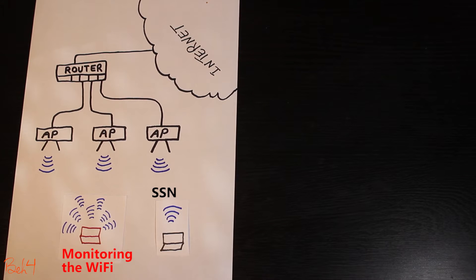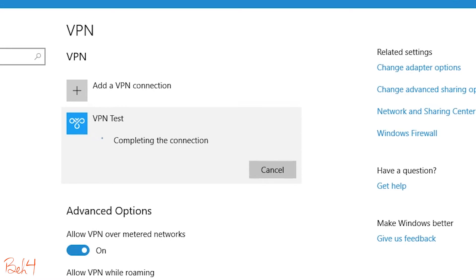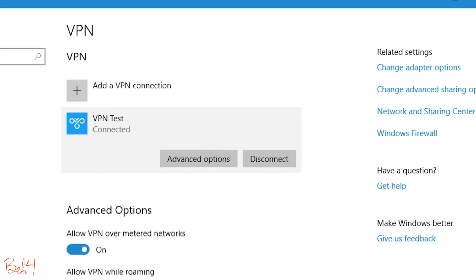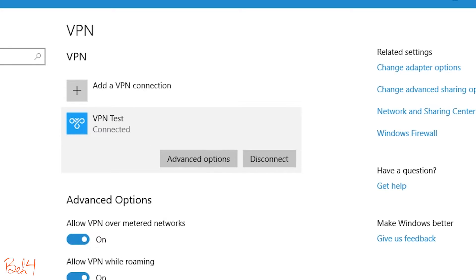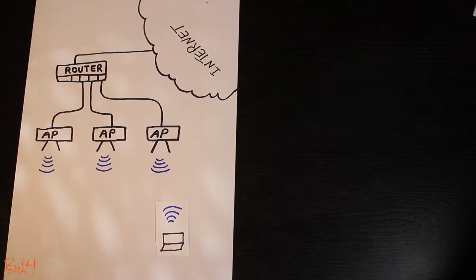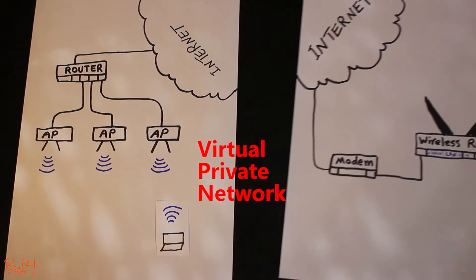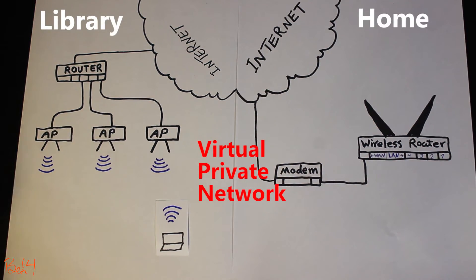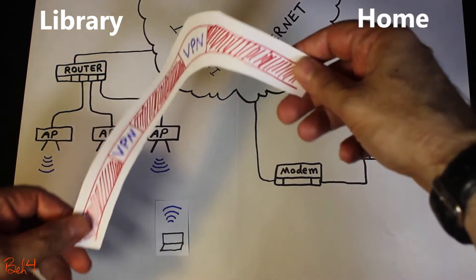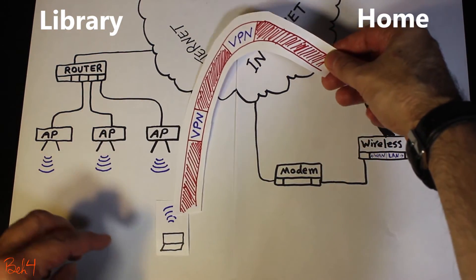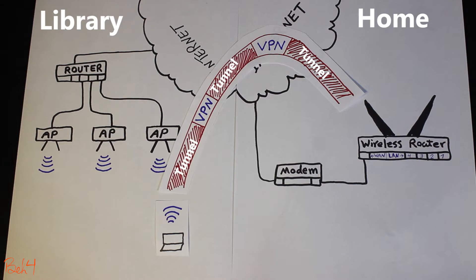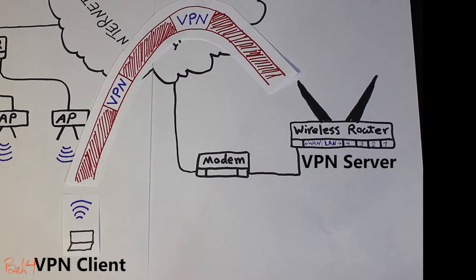What I do in these situations is use a VPN connection to add an extra layer of security. VPN, or Virtual Private Network, is a secure connection between two or more devices over the internet. It uses advanced encryption protocols and secure tunneling techniques to encapsulate the data and create a secure connection to another network over the internet.